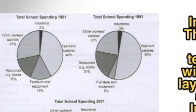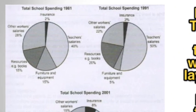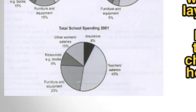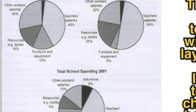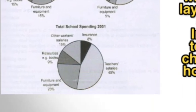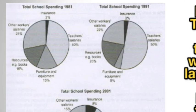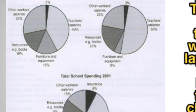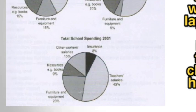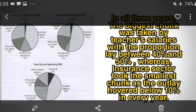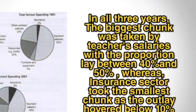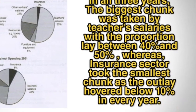In the first body paragraph, we compare teacher salaries in 1981, 1991, and 2001. The maximum teacher salary figures across the three years are 40%, 50%, and 45%. The expression we use here is: 'In all three years, the biggest chunk was taken by teachers' salaries.'